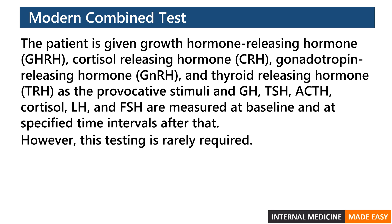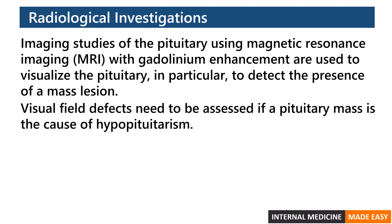In modern combined tests, the patient is given growth hormone-releasing hormone, cortisol-releasing hormone, gonadotropin-releasing hormone, and thyroid-releasing hormone as provocative stimuli. Growth hormone, TSH, ACTH, cortisol, LH, and FSH are measured at baseline and at specified time intervals. However, this testing is rarely required. Imaging of the pituitary using MRI with gadolinium enhancement is used to detect the presence of a mass lesion. Visual field defects need to be assessed if a pituitary mass is the cause of hypopituitarism.